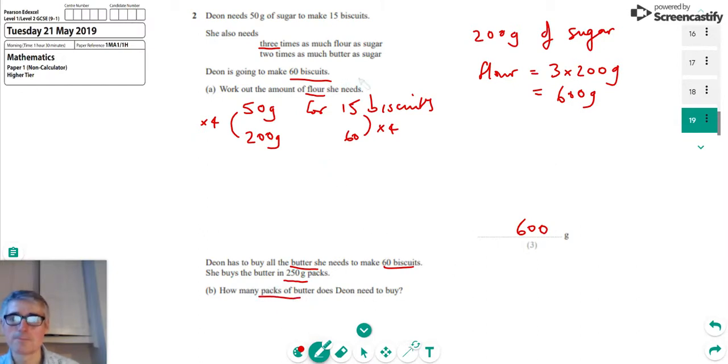Again, we're told she has to buy two times as much butter as sugar. So if she needs 200 grams of sugar, then the amount of butter that she will need is twice that. So it's going to be 2 times 200, which is 400 grams.